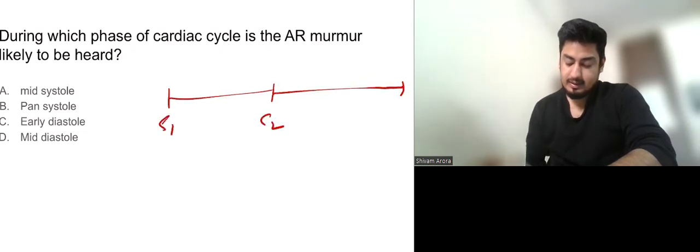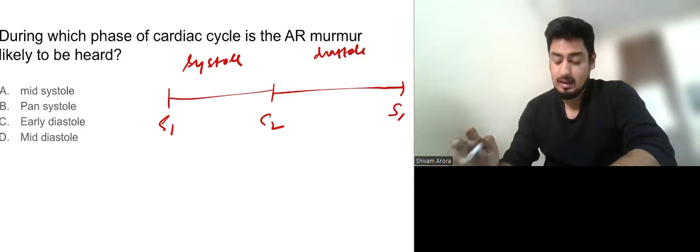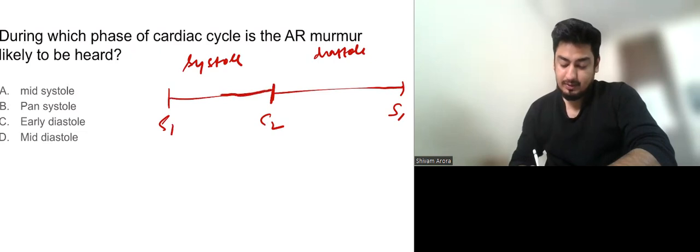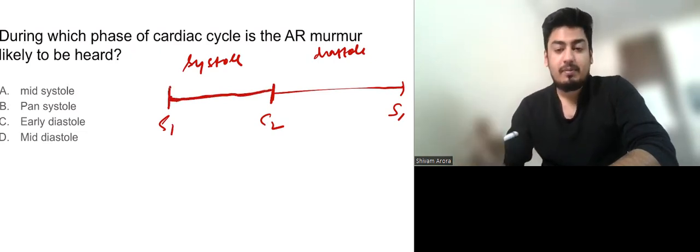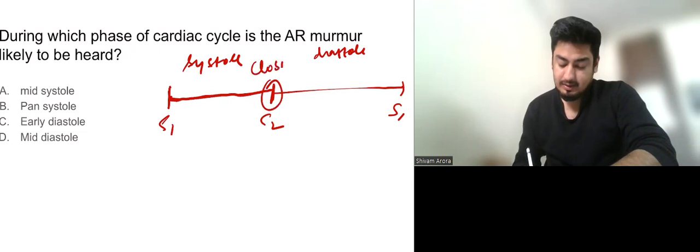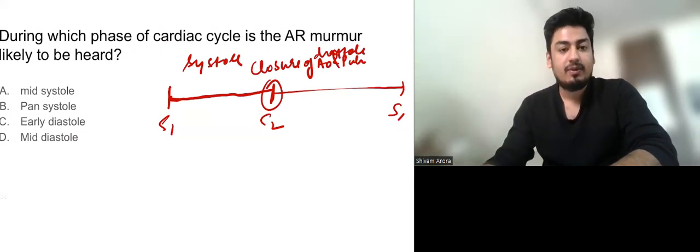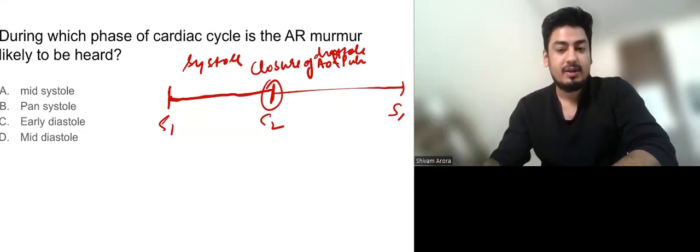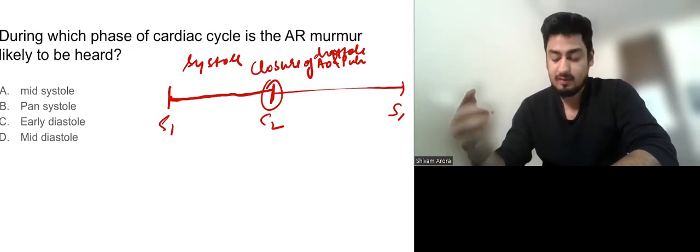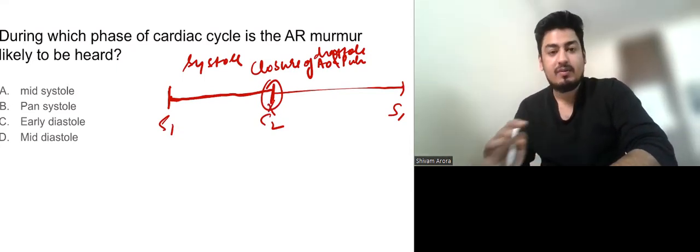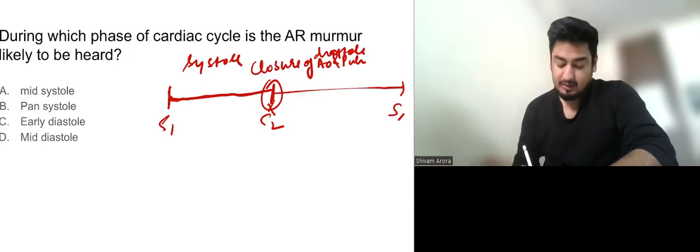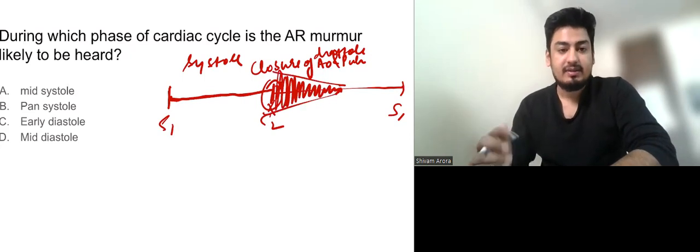Suppose this is a cardiac cycle. S1, S2 and S1. This is systole S1, S2. This is diastole. At this point S2 there is a closure of aortic and pulmonary valve. So at S2 the aortic valve is closed. But AR means aortic regurgitation. Meaning there is defective closing of aortic valve. So here the valve is closed but the aortic valve hasn't closed well. So regurgitation will start. So the murmur will start from here. And it keeps on decreasing. So the murmur is early diastolic decrescendo murmur.